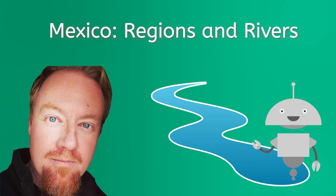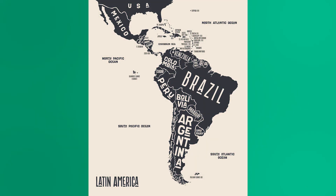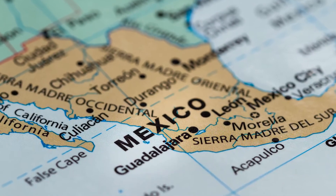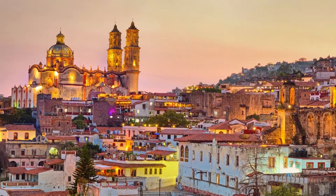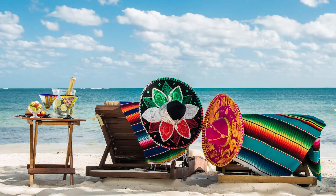Hey everybody, Brian here. As we dig deeper with our exploration of this particular region, we're going to start with a country which many people probably first think of when they hear the term Latin America. Mexico — the home of some of the most advanced civilizations in the Western Hemisphere, a crown jewel of the former Spanish Empire, a unique example of Latin American democracy, a key trading partner for Canada, the United States, Central and South America, and a destination for tourists from around the world. However, there's so much more to Mexico than the beaches, so let's start with the unique topography and geography of Mexico.